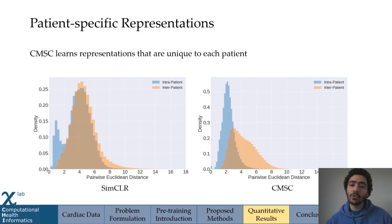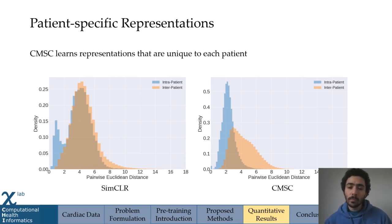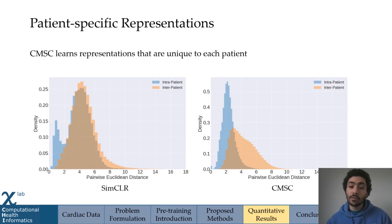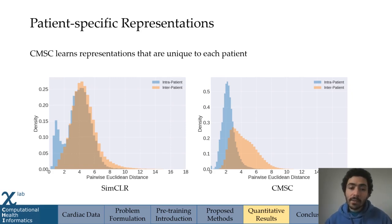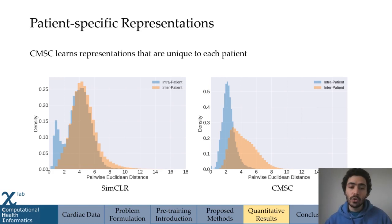Our approach naturally leads to the learning of patient-specific representations. In the figure on the right, we calculate the distance between representations of the same patient — intrapatient distances — and the distance between representations of different patients — interpatient distances — shown in blue and orange respectively. These distributions are somewhat separable, and more specifically, more separable than what you would get with a traditional SimCLR approach. This makes sense because SimCLR lacks the notion of patient specificity in its paradigm.